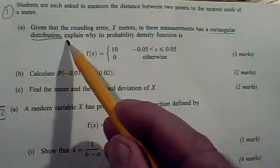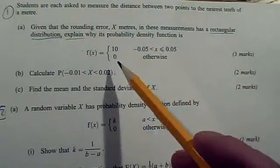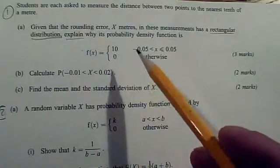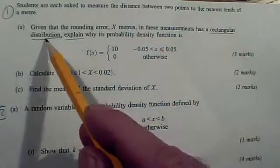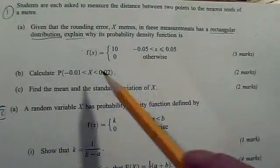We have to explain why its probability density function is this. And I think you've got to explain three things here. Firstly, you've got to show your knowledge of a rectangular distribution, which will give you the general form of the PDF.